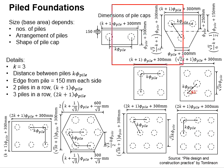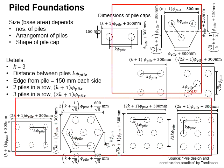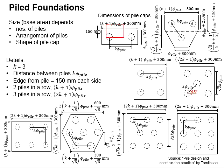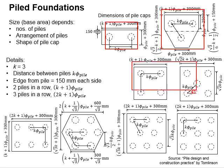This diagram shows the typical arrangements of the piles. The piles need to be arranged in a symmetrical manner and the center of gravity of the piles needs to be in line with the centroid of the columns. The shape of the pile cap will be governed by the number of piles and their arrangement.